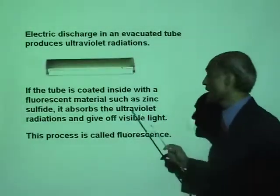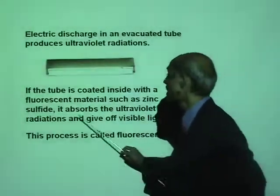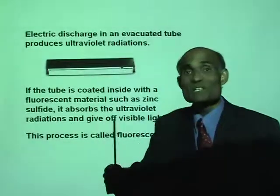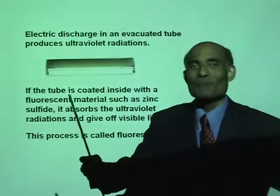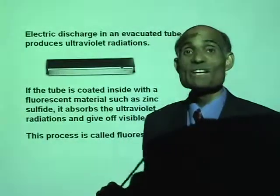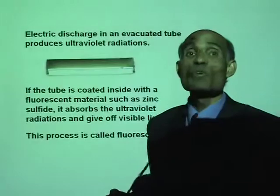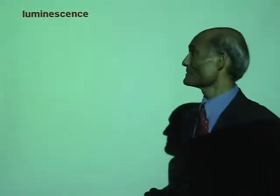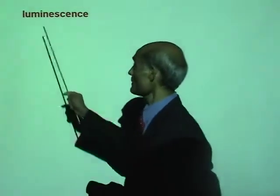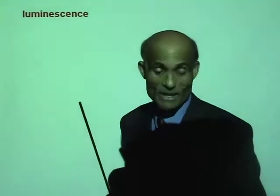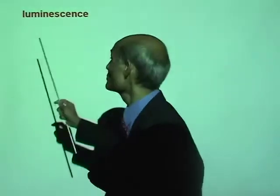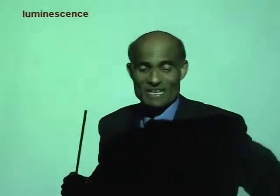Fluorescence. The zinc sulfide is a fluorescent material. So fluorescence is another way to produce light. A third way — and the most common way that most of the light in the universe is produced — is called luminescence.